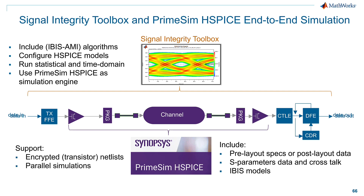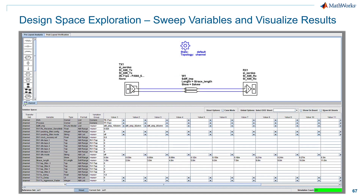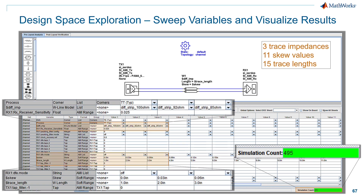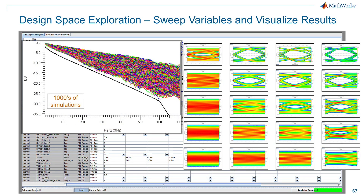We also have a Parallel Computing Toolbox that enables us to scale simulations to hundreds or thousands of simulations depending on your environment. You can set up your design space and sweep — for example, sweeping impedances, lengths, and skews, generating 495 simulations. You simply press the button and it generates all the HSPICE simulations, runs them under the hood, and then you can look at the results: insertion loss curves, hundreds or thousands of statistical or time domain eye diagrams, really finding the needle in the haystack when evaluating systems.